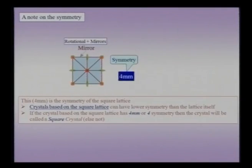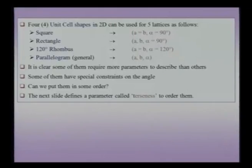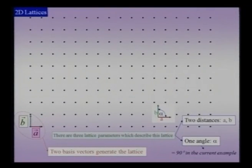Let me review these lattices before I progress into further considerations. There are five distinct two-dimensional lattices — no more, no less. These lattices are generated by two non-collinear translation vectors, because if they were collinear they cannot spread in two dimensions. There are three lattice parameters describing a lattice in two dimensions: two length scales A and B, and an included angle typically given the symbol alpha. In this example, alpha is constrained to 90 degrees, but lattices need not always have this included angle at 90 degrees.